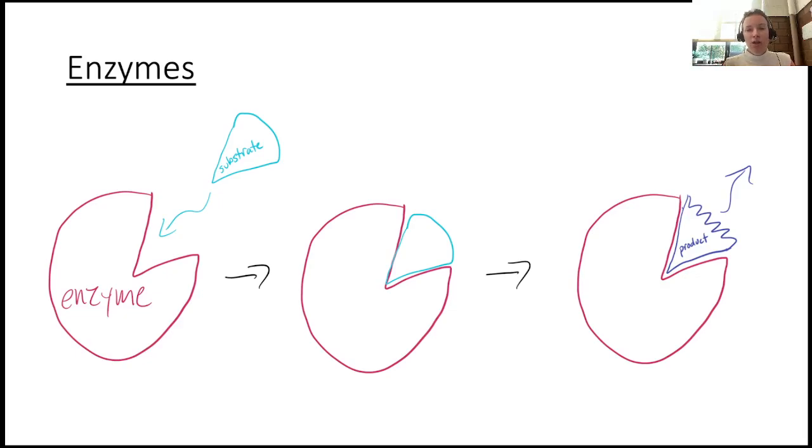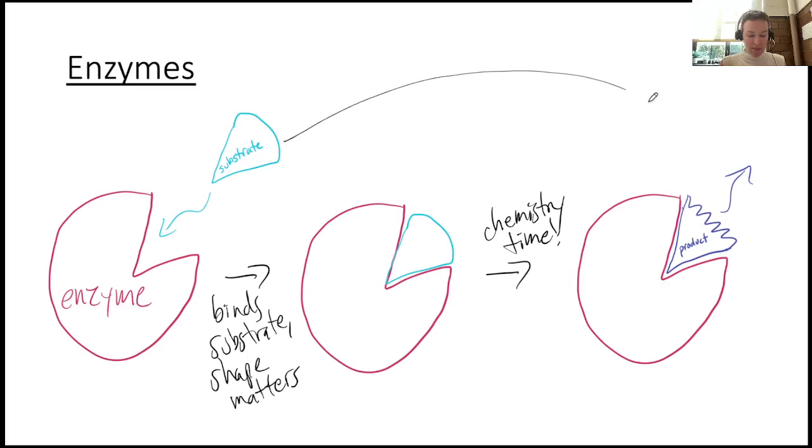And what does that look like, folks? Well, here we have an enzyme. This is a little Pac-Man enzyme. And in comes, boop, its substrate. And remember, the shape matters. You can see how nicely the substrate kind of fits in the mouth of Pac-Man. And then once it's in there, it's time to do chemistry. So some chemistry is performed, and so we change the substrate into this new, frazzled-looking product.